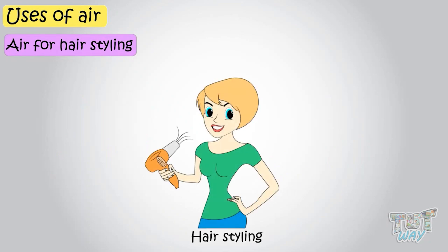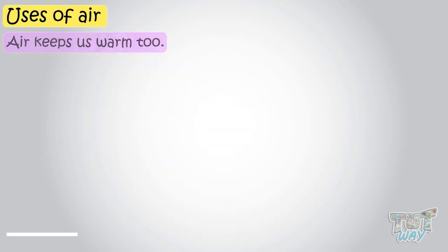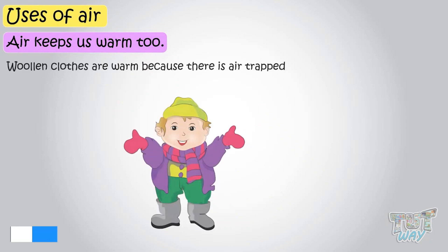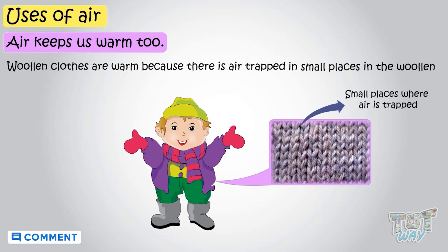Even for hair styling, we use hair dryers to dry and style our hair. Air is also used to keep us warm. Woolen clothes are worn because there is air trapped in small places in the woolen fabric.